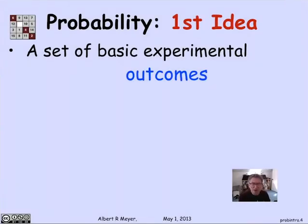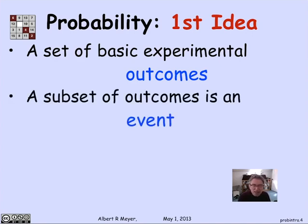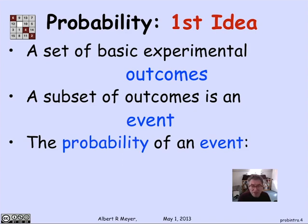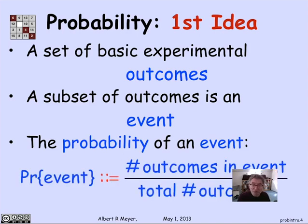So the general setup of probability - the first idea based on this illustration with a pair of jacks - is that we abstractly have some random experiment that's capable of producing outcomes, mathematical black boxes called outcomes. A certain set of the outcomes we will think of as an event that we're interested in whether or not it happens. We define the probability of an event as simply the fraction of the outcomes in the event divided by the total number of outcomes. That's the first naive idea about probability theory, and it applies to a lot of cases, but not always.